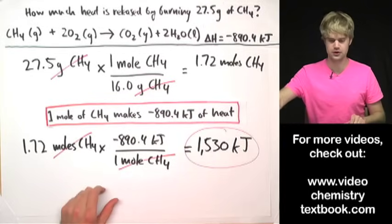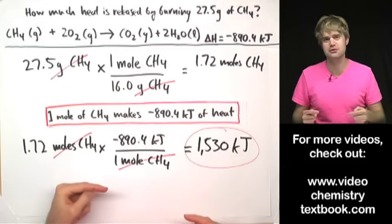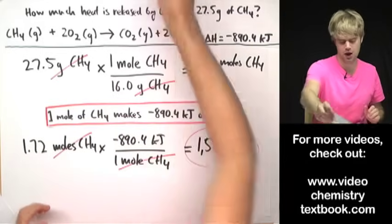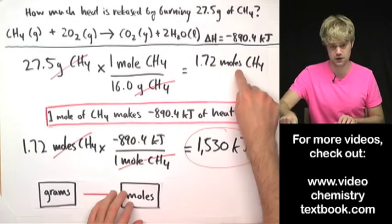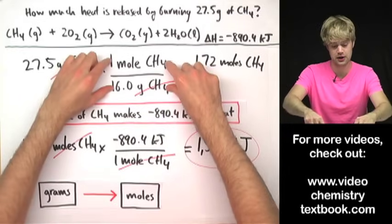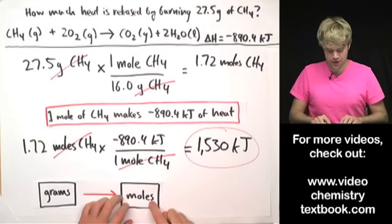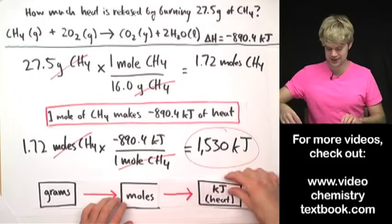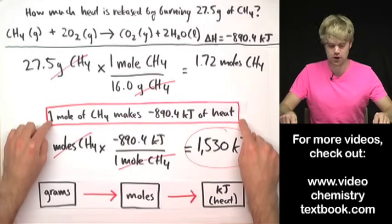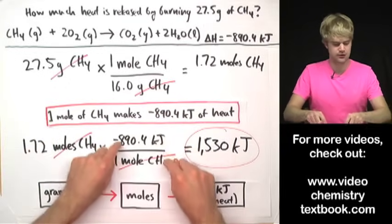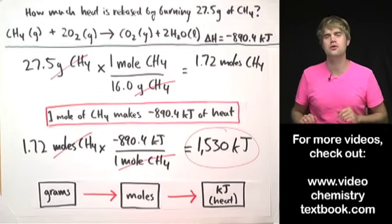1,530 kilojoules is how much total heat is released when we burn 27.5 grams. Let's review the steps: first, we converted grams of CH4 to moles of CH4 using a conversion factor with the molecular weight. Then, once we had moles, we used a conversion factor based on the equation — one mole of CH4 makes negative 890.4 kilojoules — and multiplied to get the total heat.